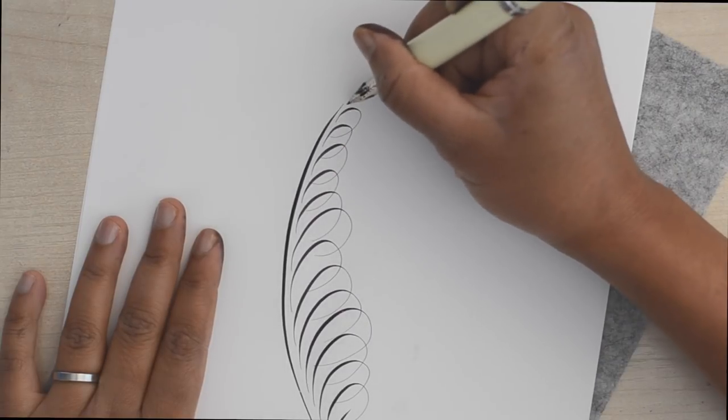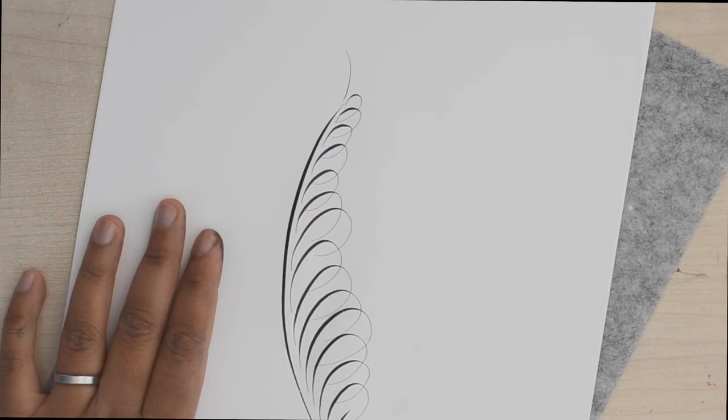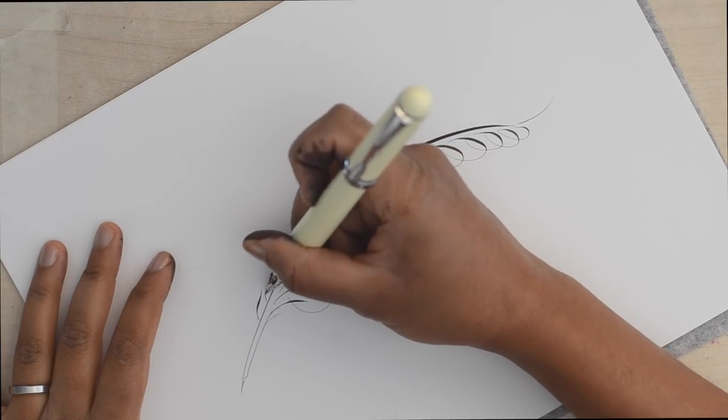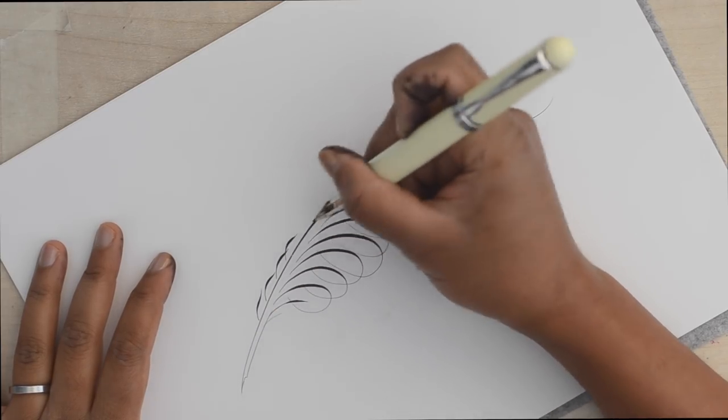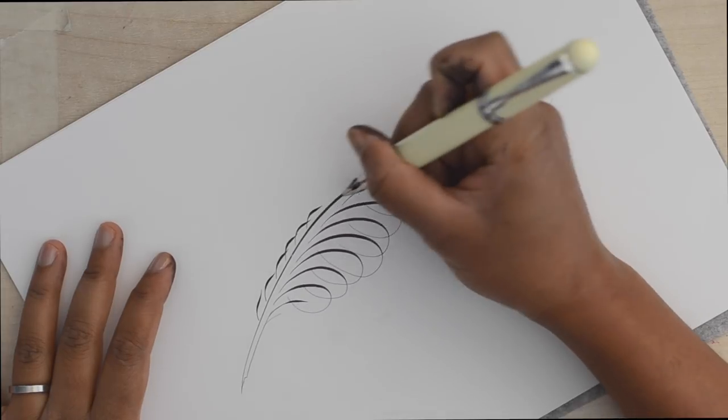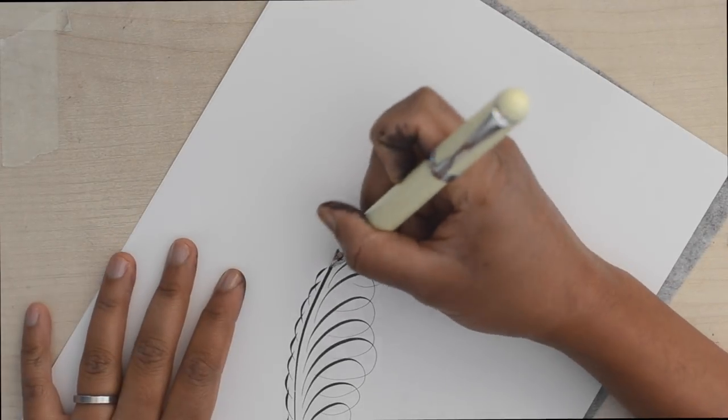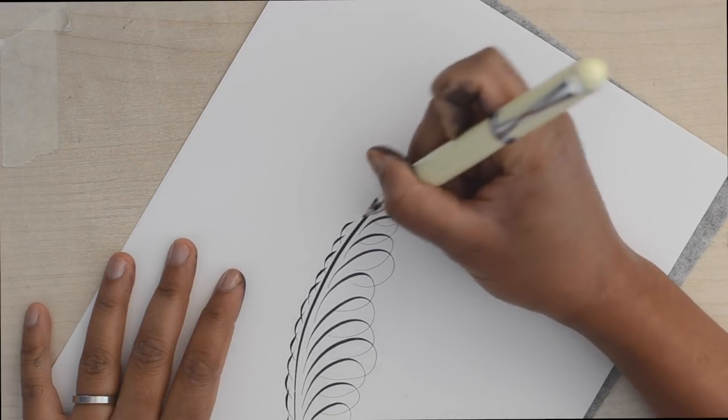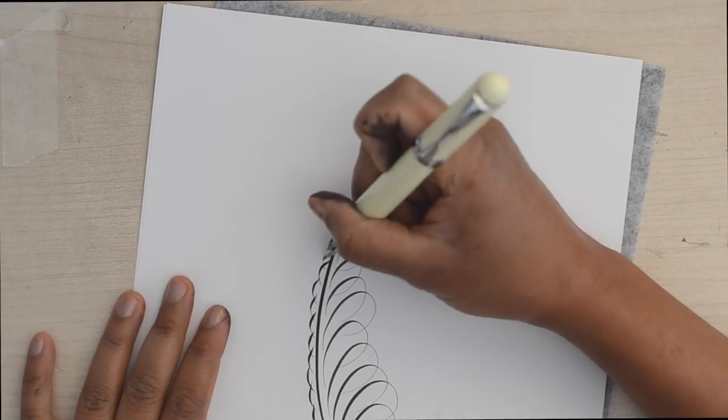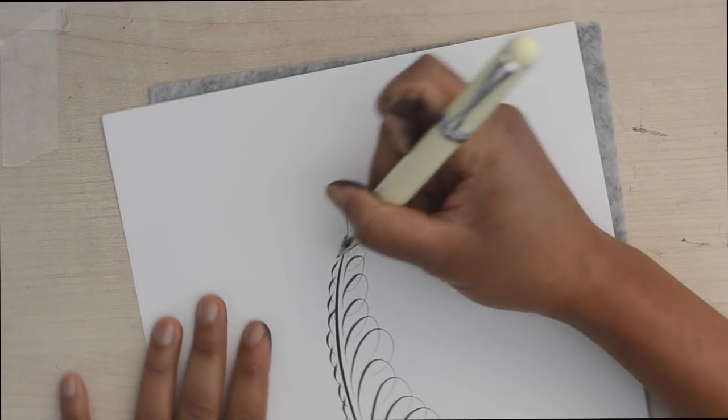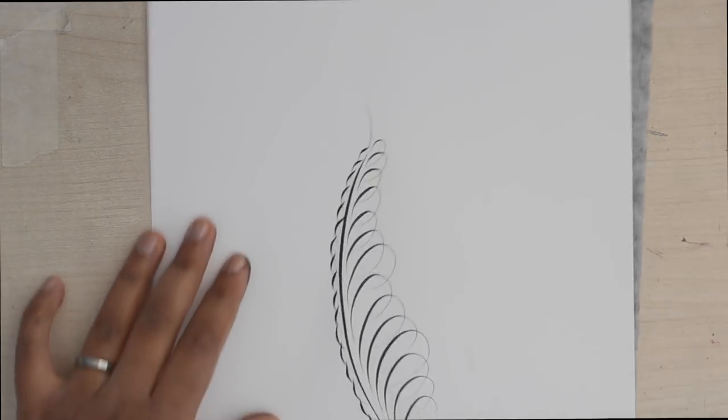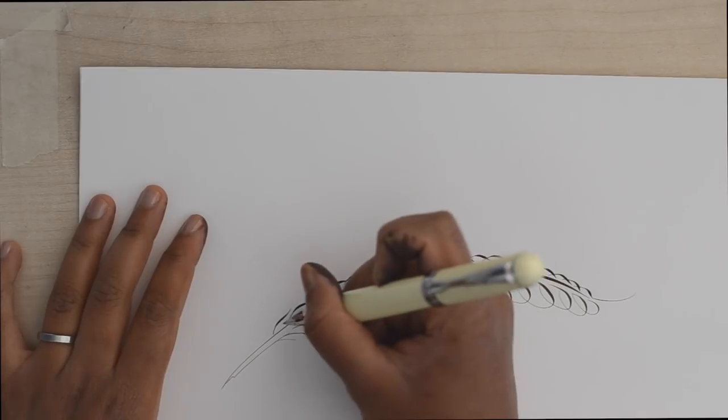I also want to mention that I first saw this tutorial for converting the Jinhao 750 into using a G-nib on Tio's blog. He's an urban sketcher who reviewed this arrangement for doing the line work that's the basis of his sketches and I'm really pleasantly surprised at how well it works for calligraphy and flourishing actually.